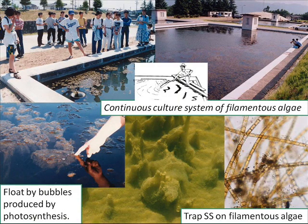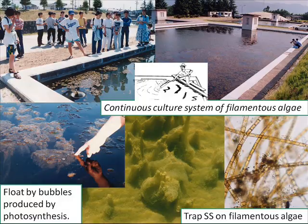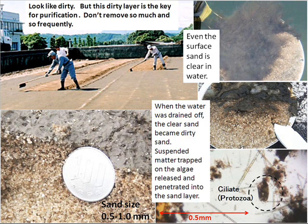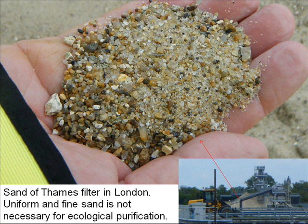A continuous culture system of filamentous algae is the key for the ecological purification system. Algal mud on the bottom lifts up and floats by bubbles produced by photosynthesis. This mud traps suspended matter among the filamentous algae. Floating algal mud runs out automatically from the overflow outlet. The surface mud looks dirty, but this dirty layer is the key for purification — don't remove it too much or too frequently. Uniform and fine sand is not necessary for an ecological purification system — this is the nearest sand media to that of the Thames filter in London.